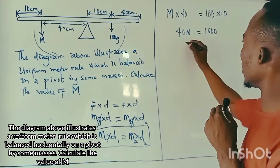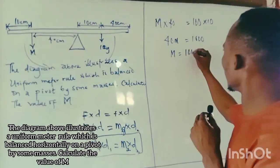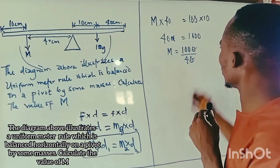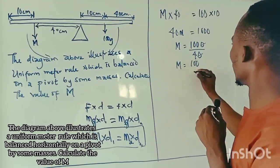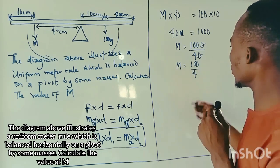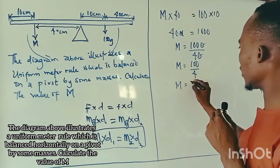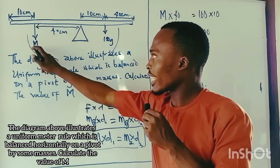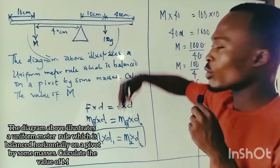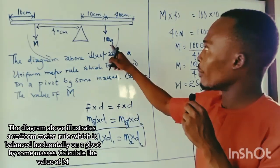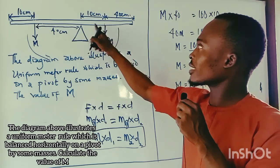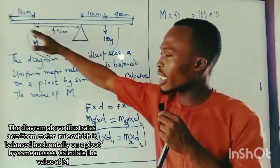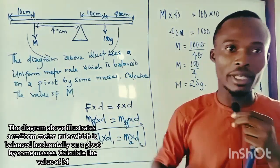Dividing both sides by 40, we get M = 1000 ÷ 40. Simplifying, zeros cancel and we have 100 ÷ 4, which gives us 25. So the mass M is 25 grams — that is the mass of the object that will balance the meter rule horizontally when 100 grams is on the other side keeping a distance of 10 cm to the pivot.